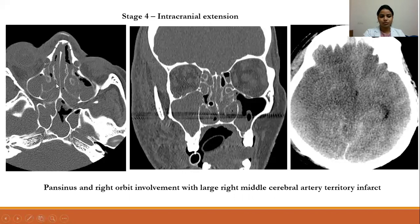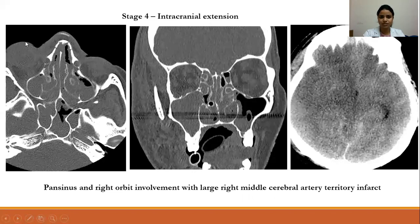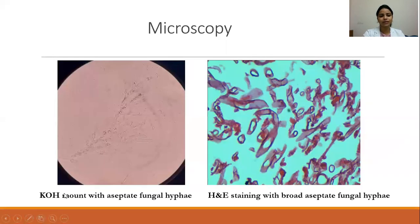One patient showed pan-sinus involvement with right orbit involvement with mild proptosis, and the right cheek was also involved. There was an area of infarct in the right middle cerebral artery territory with mild midline shift. On microscopy, KOH mount and HNE staining showed broad aseptate fungal hyphae, consistent with mucormycosis.